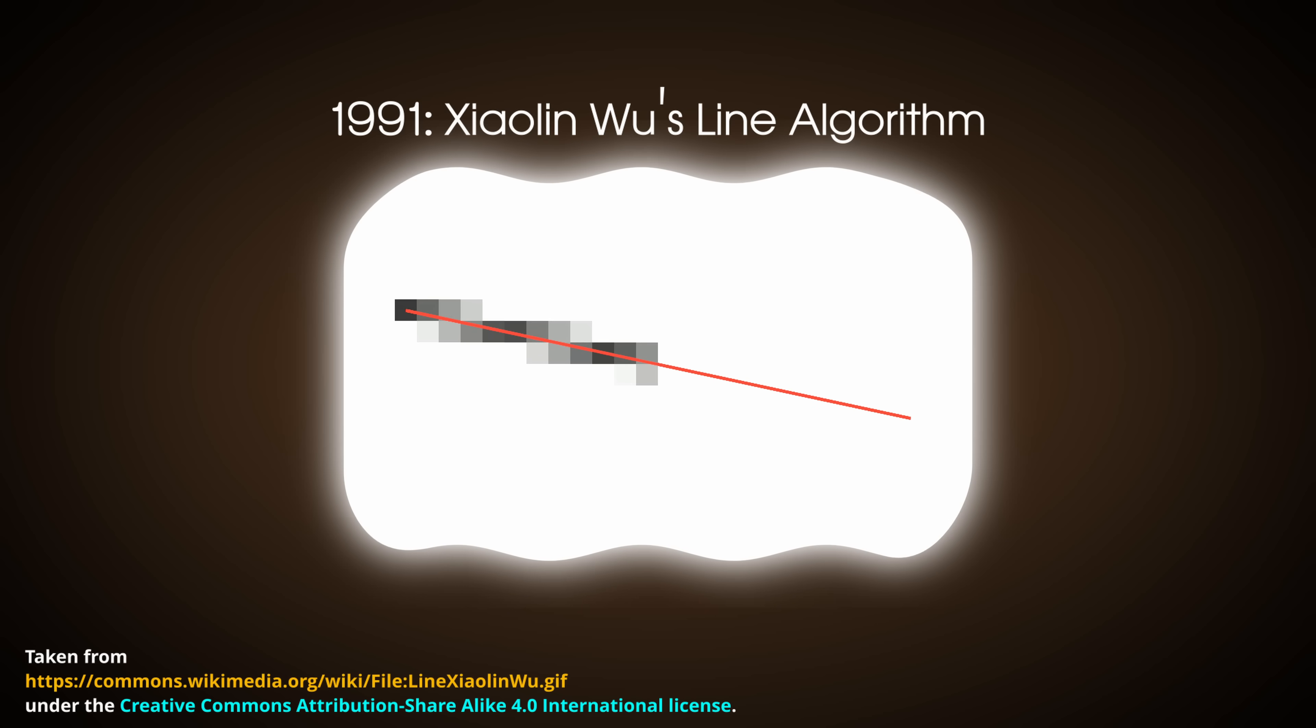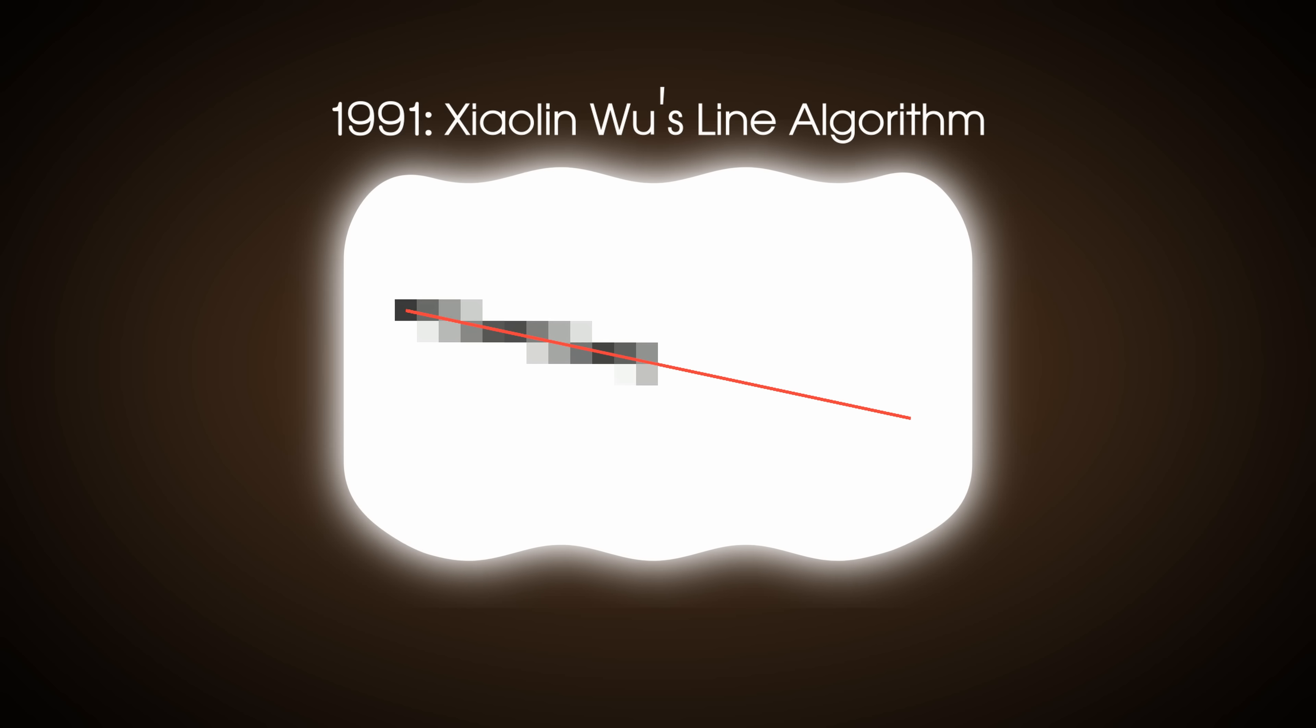We could make the line look even better if we apply some anti-aliasing. In 1991, another computer scientist named Zhao Lin Wu made an algorithm that draws pairs of pixels straddling the line, which are colored according to their distance from the line. This gives the illusion of a smoother shape and makes the graphics look more natural, at the cost of more computation.